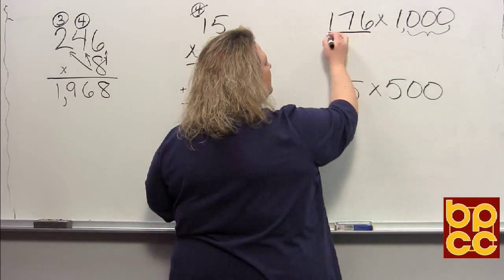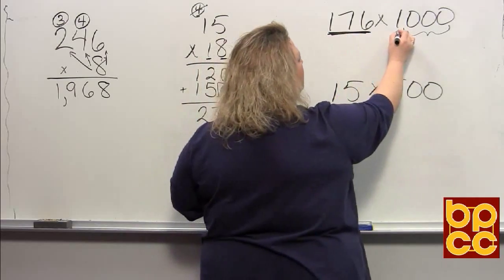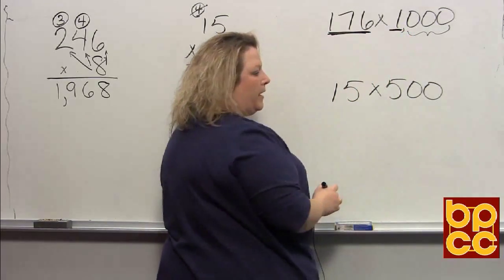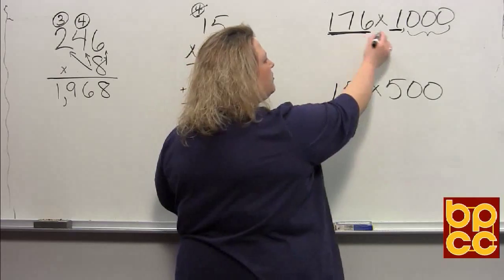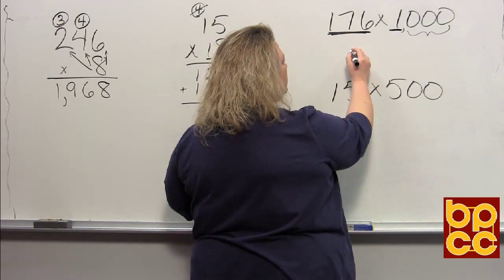We multiply the digits, the 176, and multiply it to the 1. So 176 times 1 is just 176.